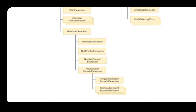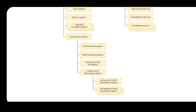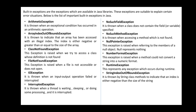Runtime exceptions include divide by zero, null pointer assignment, number format exception, and index out of bounds exception. Simple examples for these will be covered in the next class.